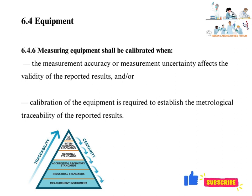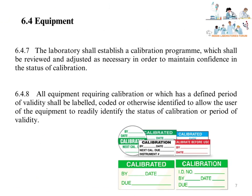Metrological traceability means establishment of an unbroken chain of calibrations to national or international standards. The laboratory shall establish a calibration program, which shall be reviewed and adjusted as necessary to maintain confidence in the status of calibration. The laboratory should have a documented calibration schedule reviewed periodically; if required, calibration frequency can be increased or decreased based on technical justification.